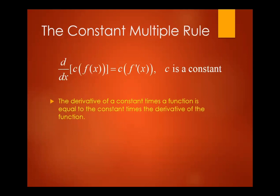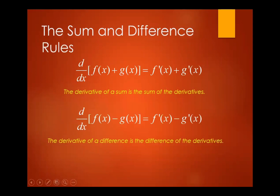Constant multiple rule: for a constant C times the function F of X, you transfer the constant outside and get the derivative of F of X. For the sum and difference rule, given F of X plus G of X, you just distribute the operation, giving F prime of X plus G prime of X.